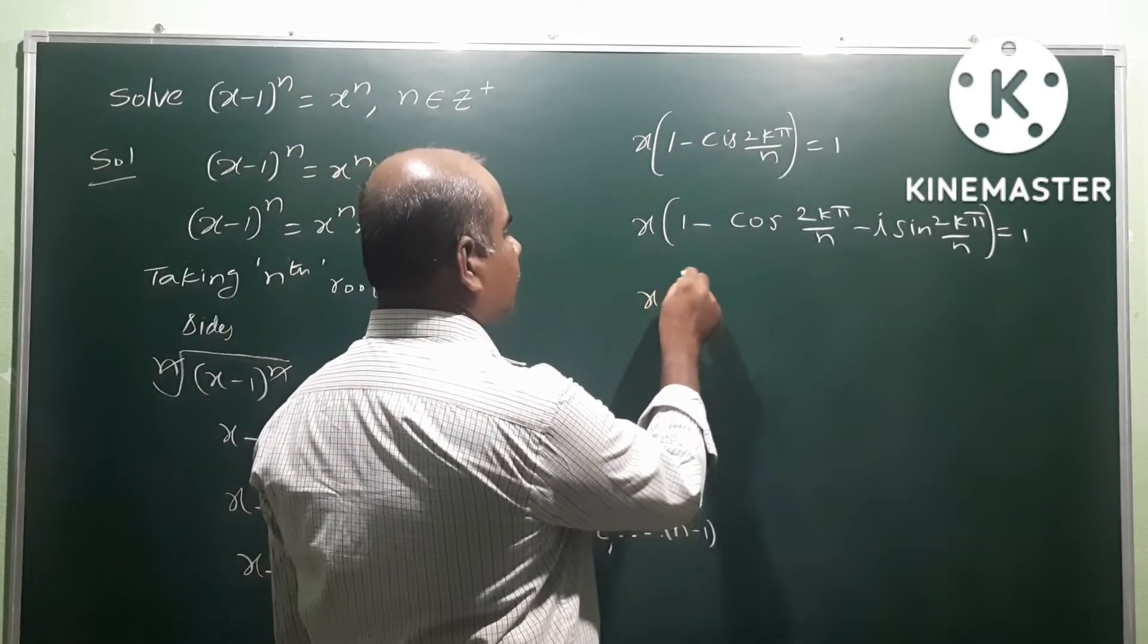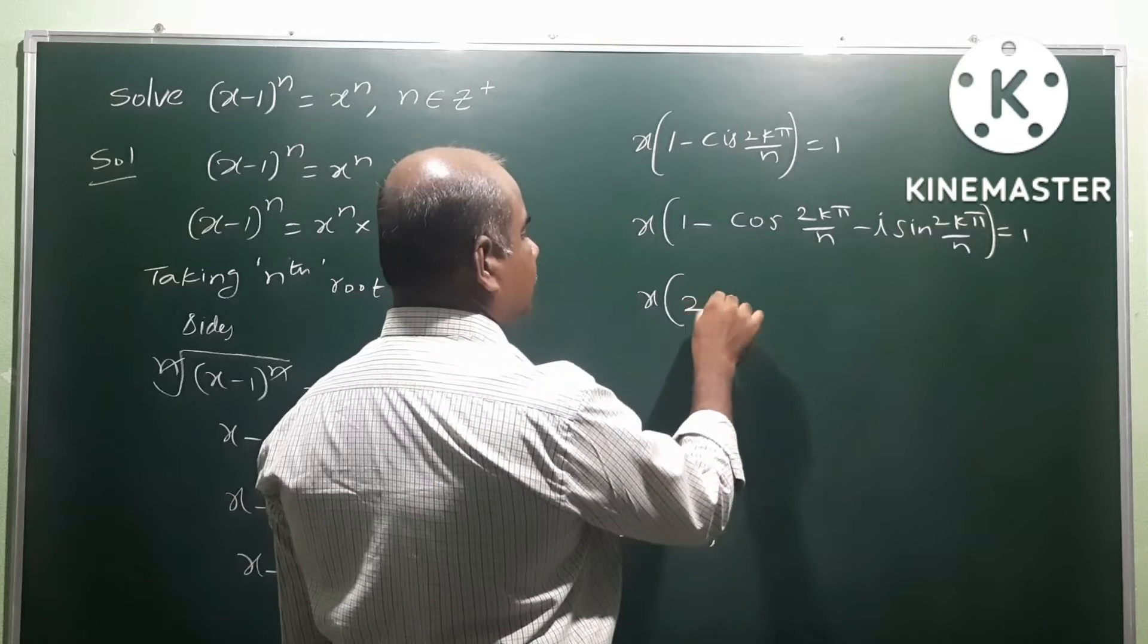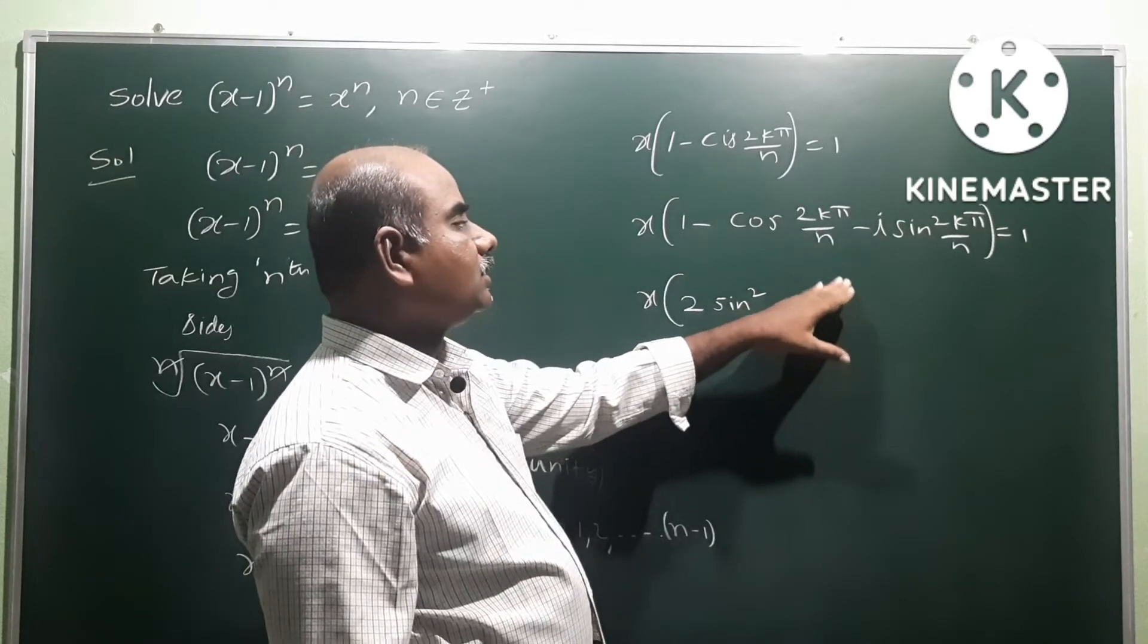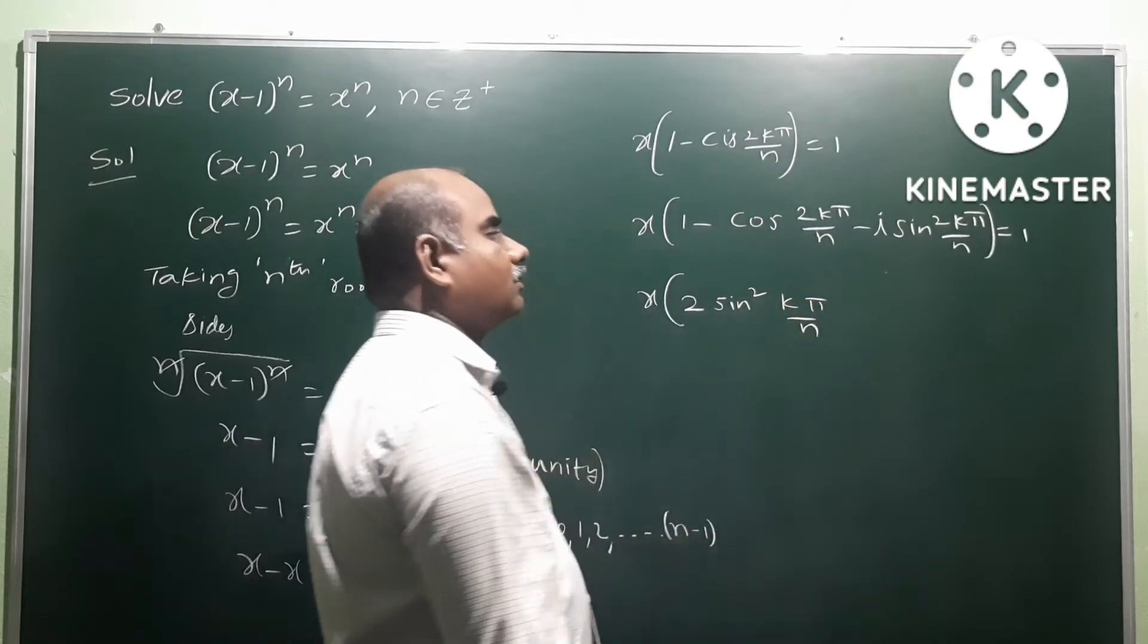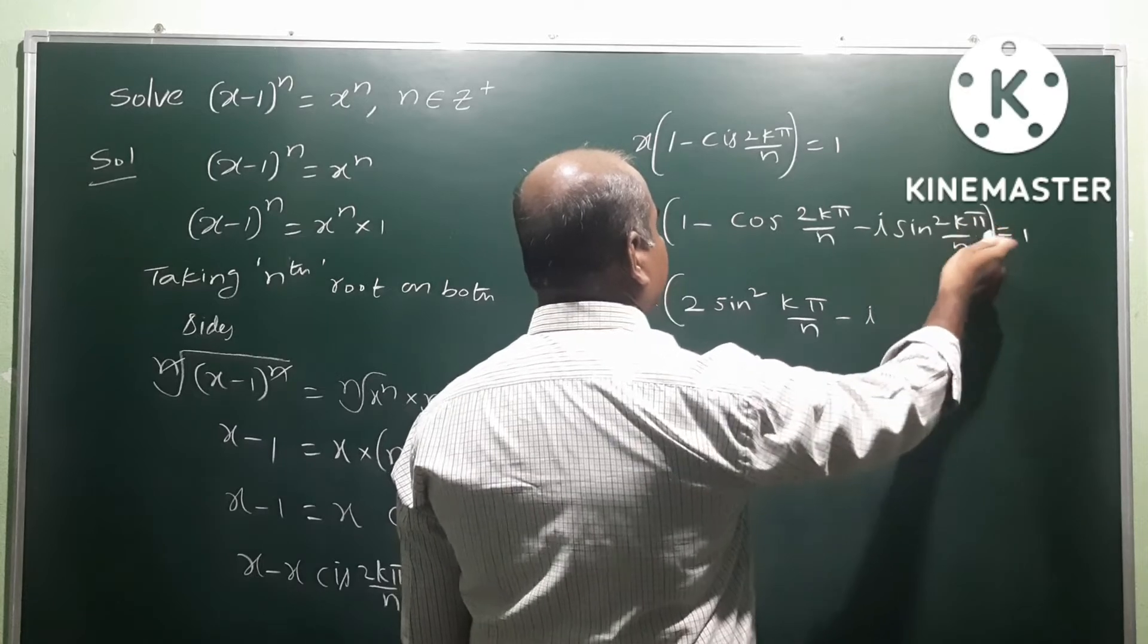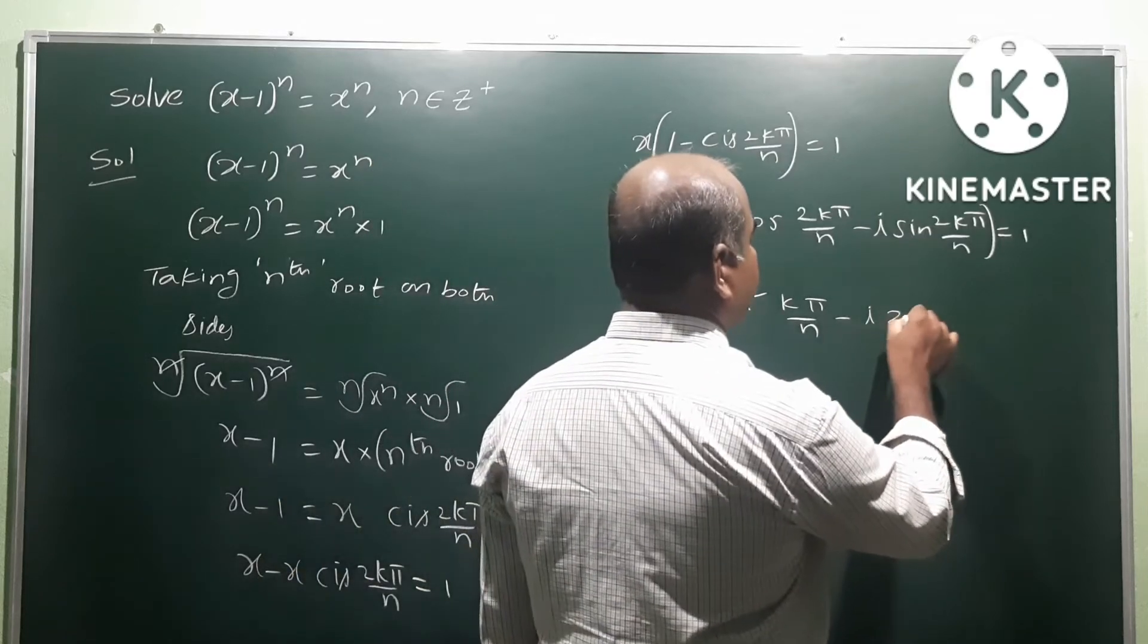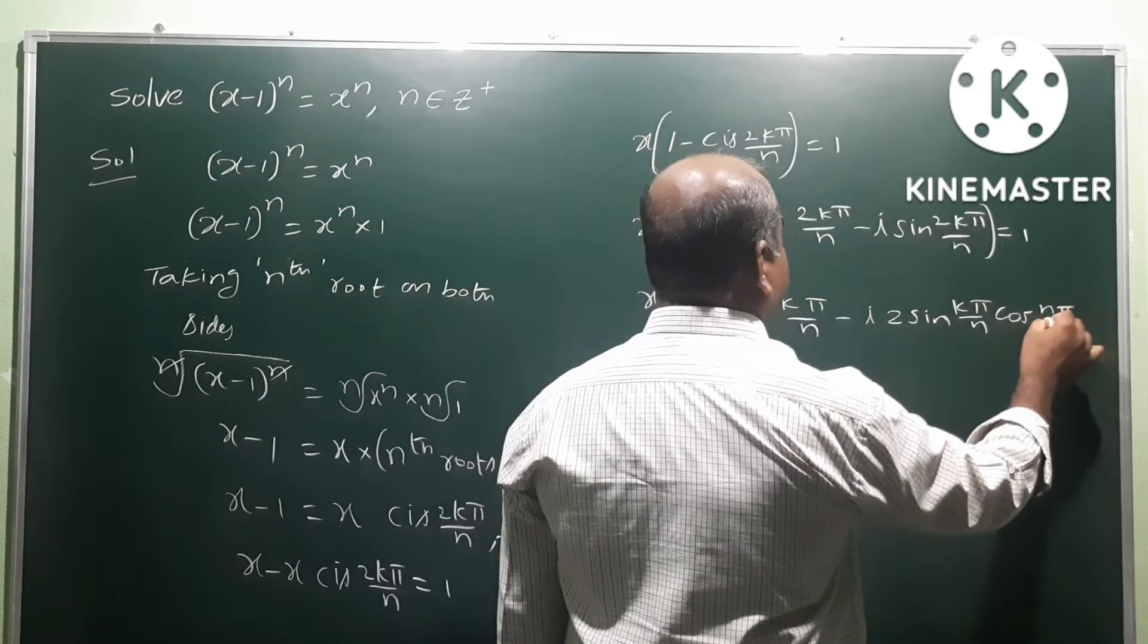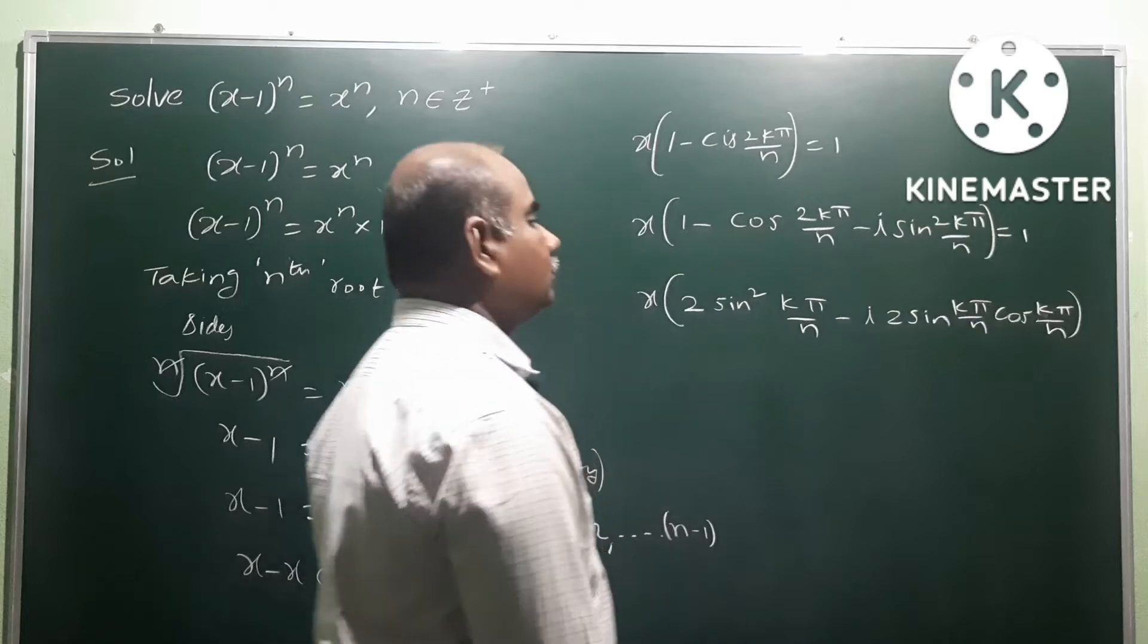Next, x times (1 - cos(θ)) can be written as 2sin²(θ/2) using the identity. So taking θ as kπ/n, we get 2sin²(kπ/n) minus i·sin(2kπ/n). That equals 1.